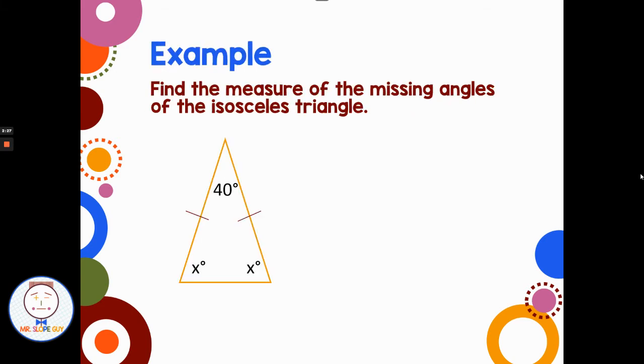So find the measure of the missing angles of the isosceles triangle. Well, we have one angle is 40 degrees, and then we have x and x. They're both the same amount, and that makes sense because this marking indicates these two sides are the same. So these two angles are the same, so we're using the same variable to represent both of those angles.